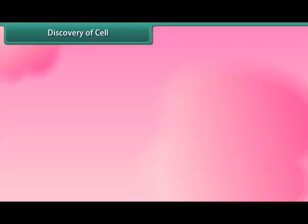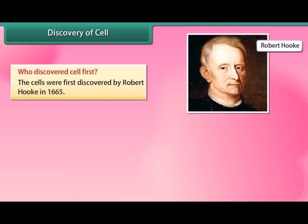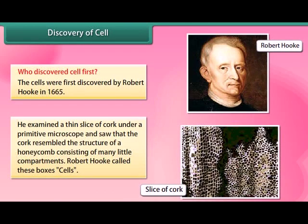The cells were first discovered by Robert Hooke in 1665. He examined a thin slice of cork under a primitive microscope and saw that the cork resembled the structure of a honeycomb, consisting of many little compartments. Robert Hooke called these boxes 'cells'.